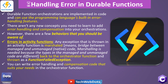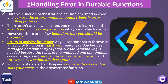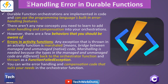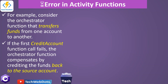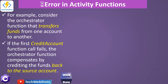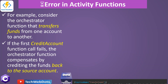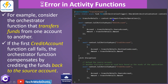Any exception that is thrown in an activity function is marshalled back to the orchestrator function and thrown as a FunctionFailedException. This is the actual type. You can write error handling and compensation code that suits your needs in the orchestration function, or even in your activity function as well. For example, consider a function that transfers funds from one account to another.